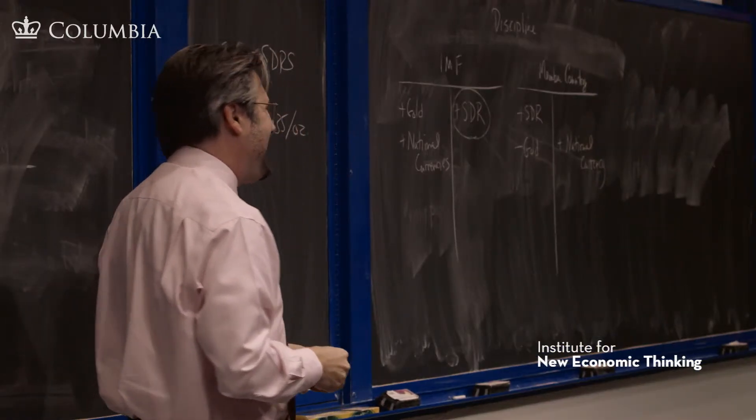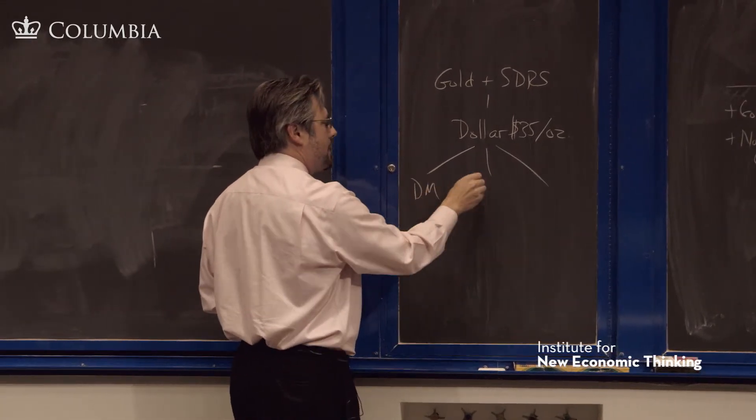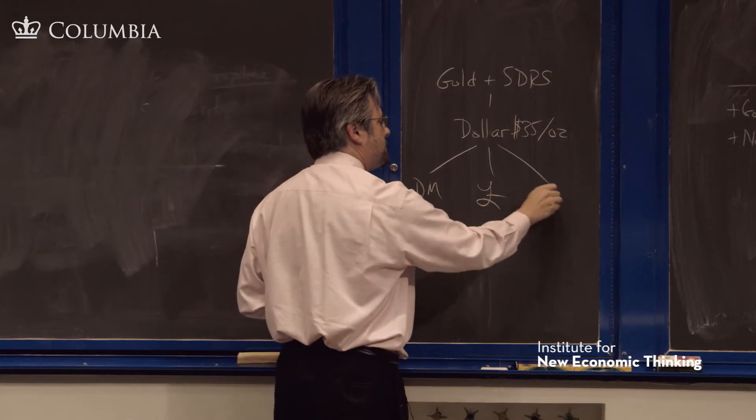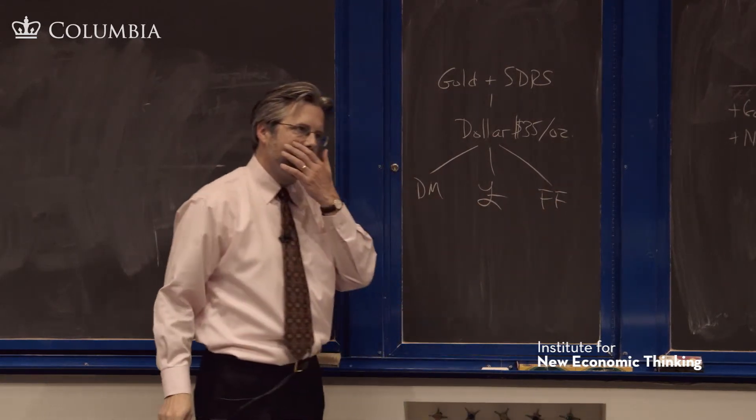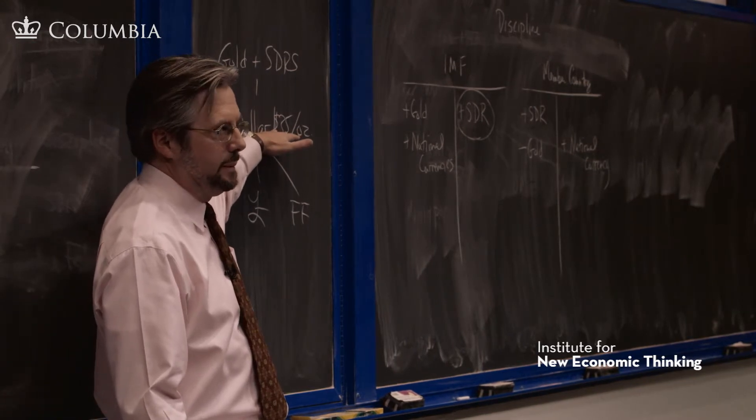And underneath that is all the other currencies - Deutsche Mark, British Pound, French Franc - which are pegging to the dollar. This is the Bretton Woods Agreement.